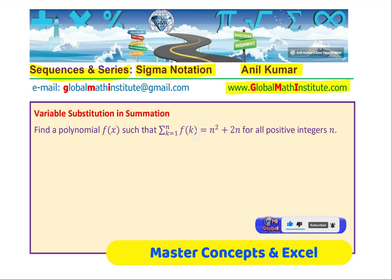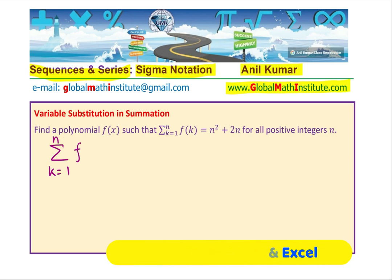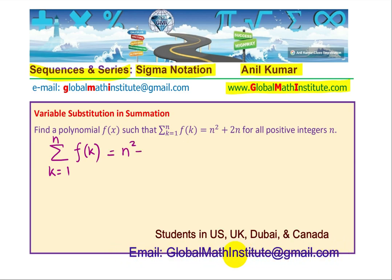Now, what does that mean? The index k is going from 1 to n, f equals to this. So let us rewrite the expression in the normal form and then we will solve it. So what we are given here is that the sum, when k equals 1 to n, then sum of all the functions f(k) is equal to n² + 2n.